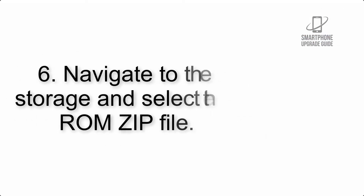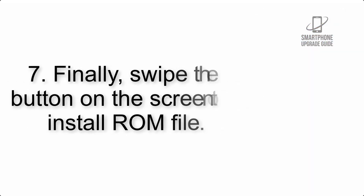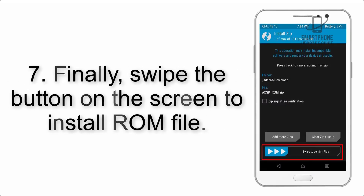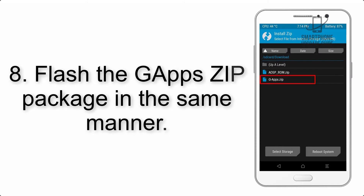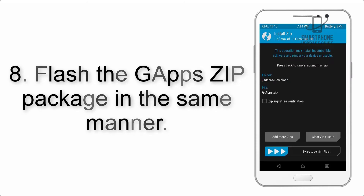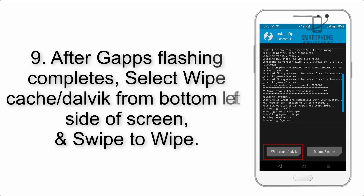Step 6: Navigate to the storage and select the ROM zip file. Step 7: Swipe the button on the screen to install the ROM file. Step 8: Flash the GApps zip package in the same manner.